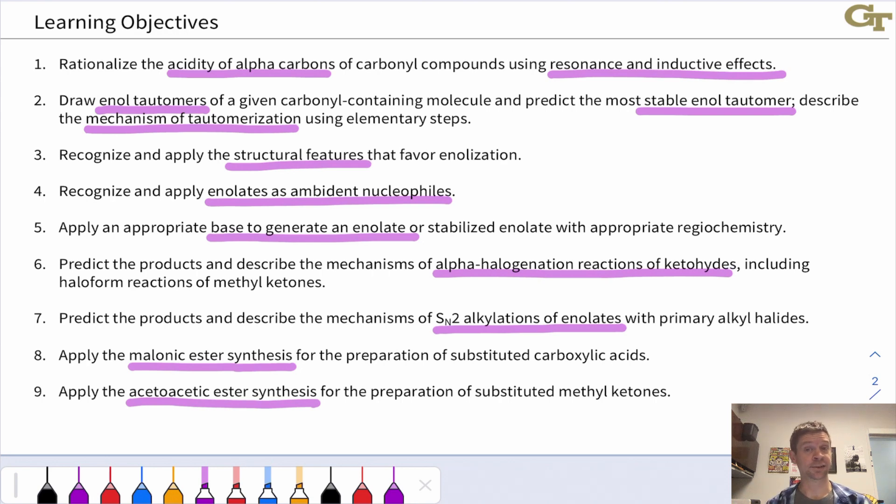We'll look at enolates as nucleophiles at both carbon and oxygen here, and we'll learn how to generate enolates using an appropriate base, in particular when there is an issue of the substitution pattern of the enolate. Two different alpha carbons exist in many ketones, for example, and we can choose the base strategically to generate one enolate or the other. Then we'll start to look at reactions involving enols and enolates.